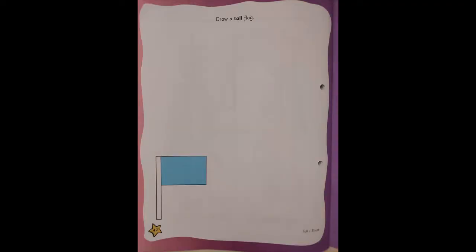After doing this activity, we are going to do the activity in Little Think of Mathematics. Open your Little Think of Mathematics and turn to page number 42. It's very simple — there is a blue color flag given on that page.